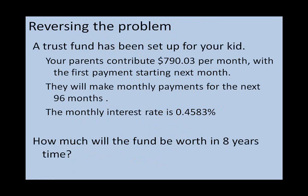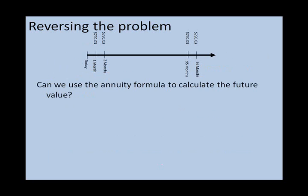This was a more complicated but more realistic example. Now let's reverse the problem. Suppose a trust fund has been set up for your kid, and your parents contribute $790.03 per month, with the first payment starting next month. They're going to make payments for the next 96 months, and the monthly interest rate is 0.4583%. The question now is: how much will the fund be worth in eight years time? We've been asked to calculate the future value — how much will this trust fund be worth in 96 months' time?